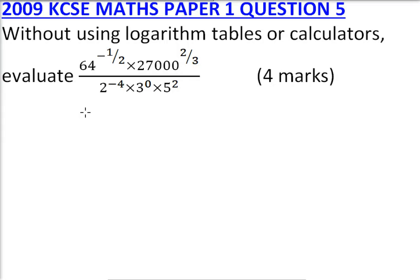2009, paper 1, question 5. Without using logarithmic tables or calculators, evaluate 64 to the power minus one-half multiplied by 27,000 to the power two-thirds, all divided by 2 to the power minus 4, multiplied by 3 to the power 0, multiplied by 5 squared.